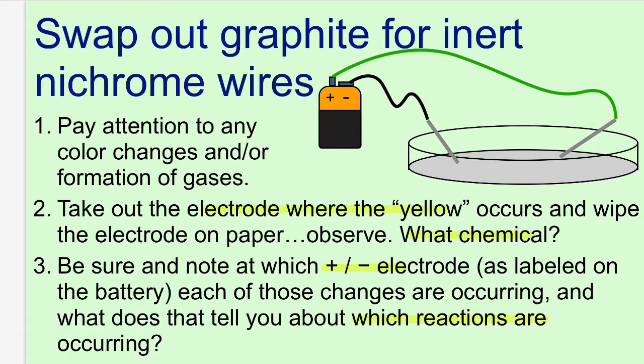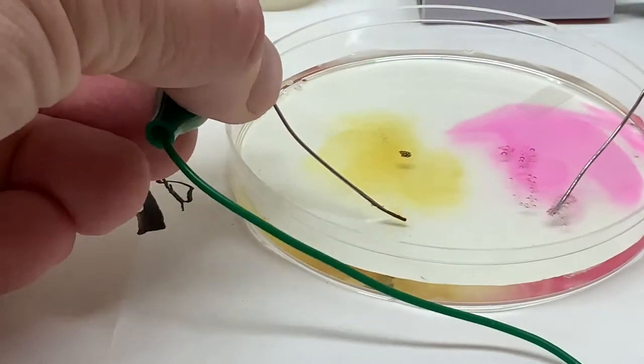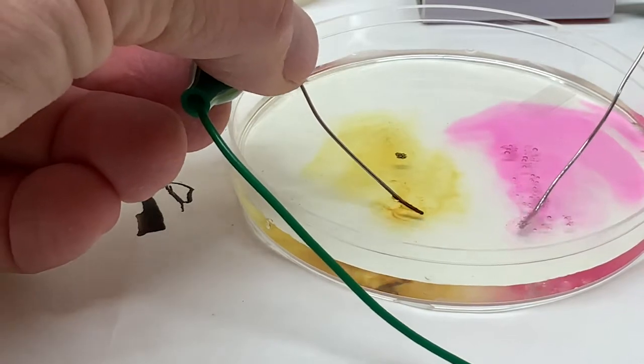Next, the pencils will be swapped out for inert nichrome wires. Make the same observations as before. Be sure you pause the video at some point and answer questions 9 through 12.